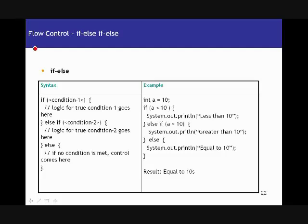Flow control in Java directs the flow of execution in your programs. When you write your methods, you would not necessarily want all the statements to be executed sequentially one after the other. There might be cases where you want certain statements executed based on some conditions, or certain statements executed repeatedly based on some conditions. You achieve that using flow control statements.